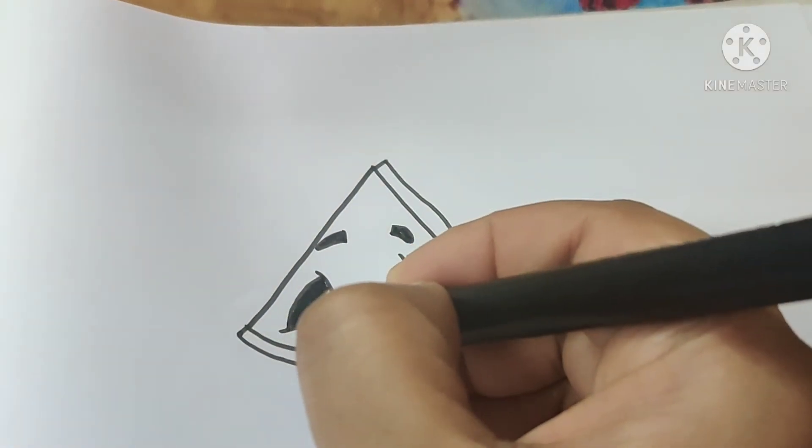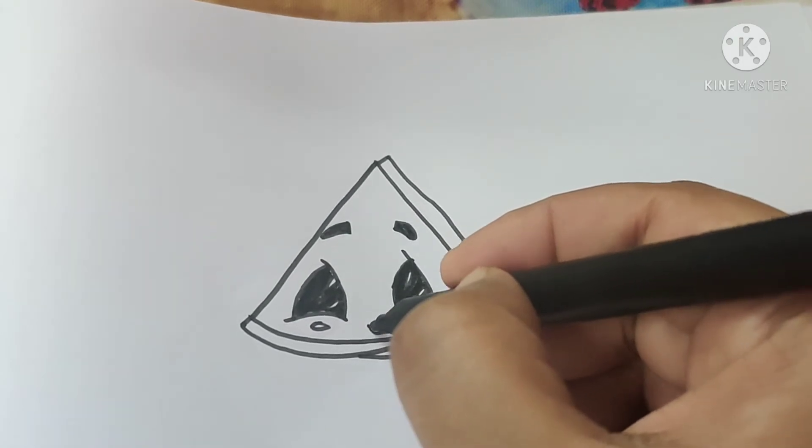Now we will make the small detailings, which will be its small mouth and the seeds.